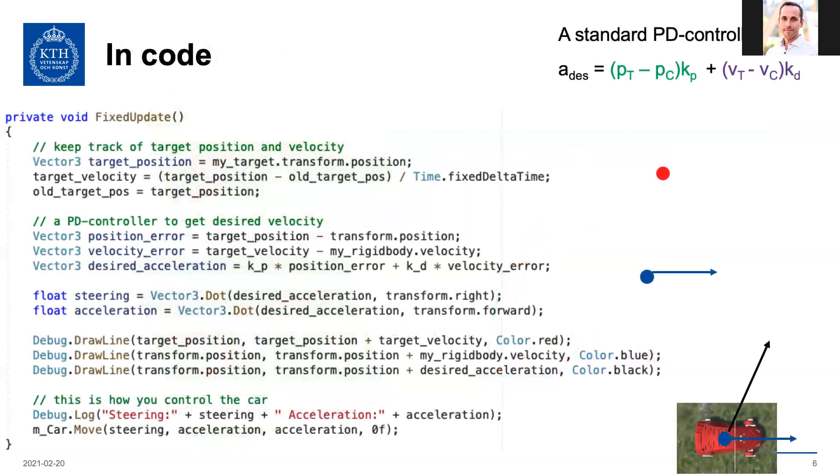In terms of code in Unity, it would look like this. It's part of the FixedUpdate method. The first part here, we keep track of the target, the target position, and then we estimate the velocity by taking the difference, dividing by the fixed delta time, and then we keep track of the old position so that we get a new update each instance this is called.